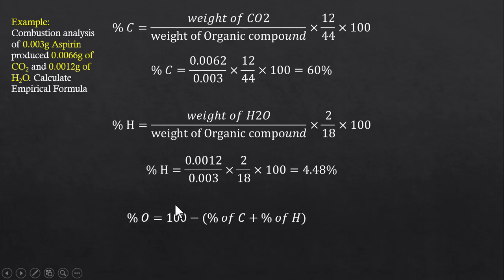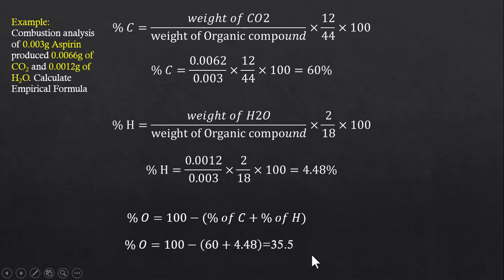Now we can add these two numbers and subtract them from 100, and this gives us the percentage of oxygen, which comes out to be 35.5%.